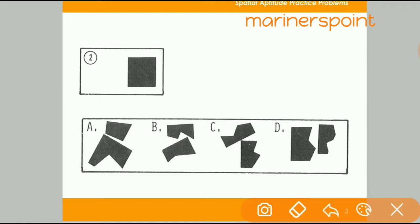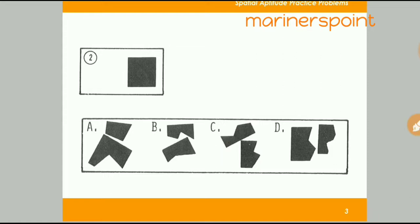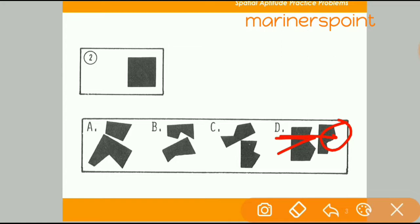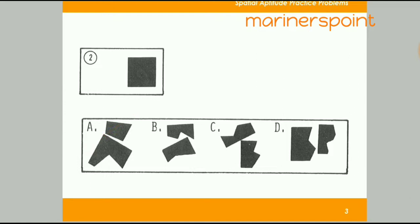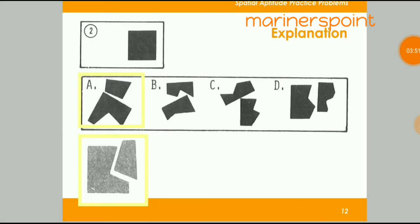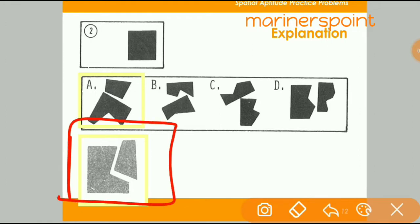For option C, we have to fill here, but this will not fit because the distances are not equal — this is big and this is small, and they should be equal. So C is not the right answer. Option D also has no proper construction to fit the gap. So our right answer is A, and we can verify that it fits correctly.